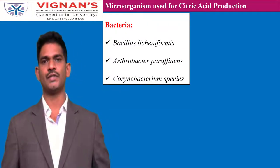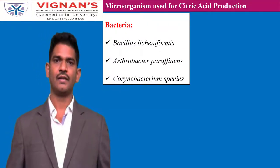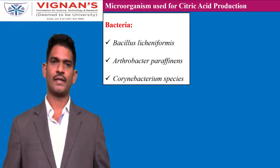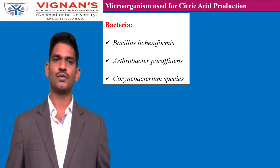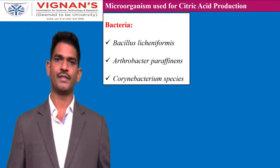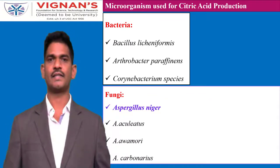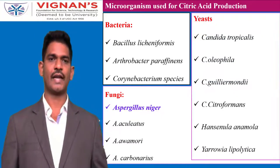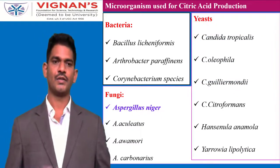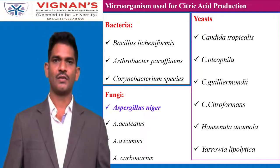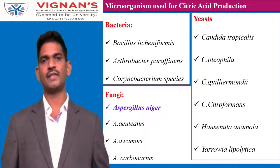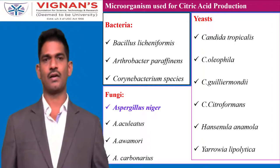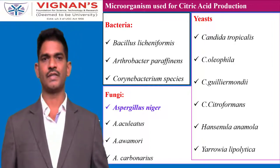Microorganisms used for production of citric acid include bacteria such as Bacillus, Arthrobacter, and Corynebacterium species. From fungi, you can use Aspergillus niger. From yeast, you can use Candida species and Yarrowia species. Among all, Aspergillus niger, a filamentous fungi, is the preferred inoculum for commercial production of citric acid.